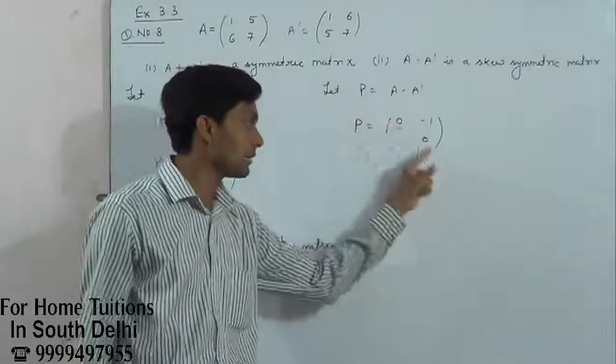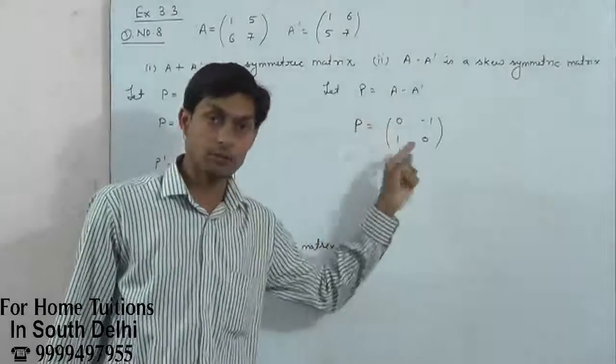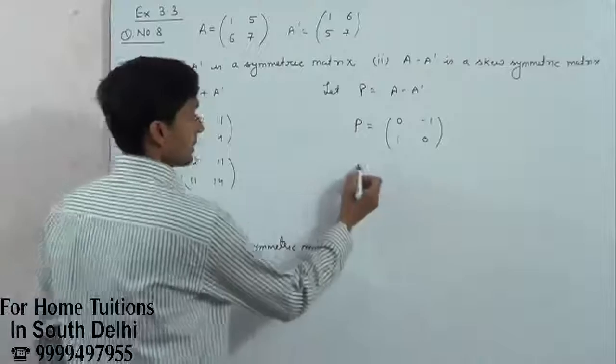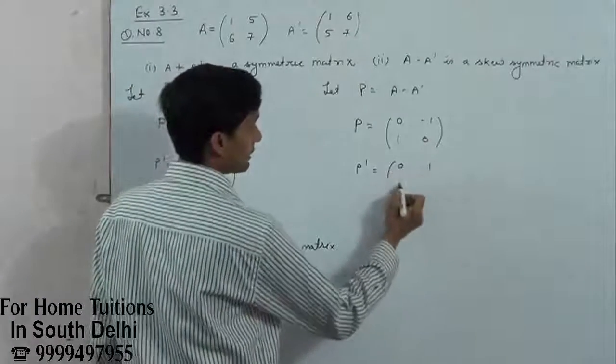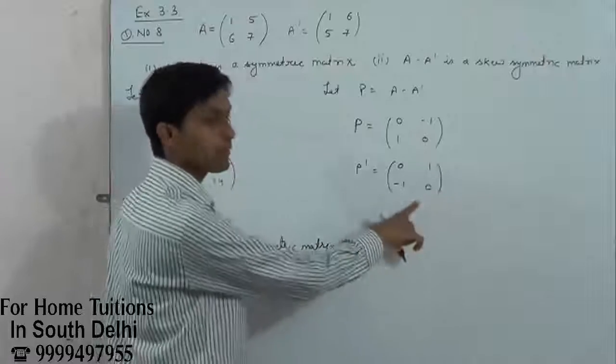For skew-symmetric, all the elements of its principal diagonal will be zero. This one will be the principal diagonal. Now P dash, what is it? Zero, one, minus one, zero. Is this equal to P?